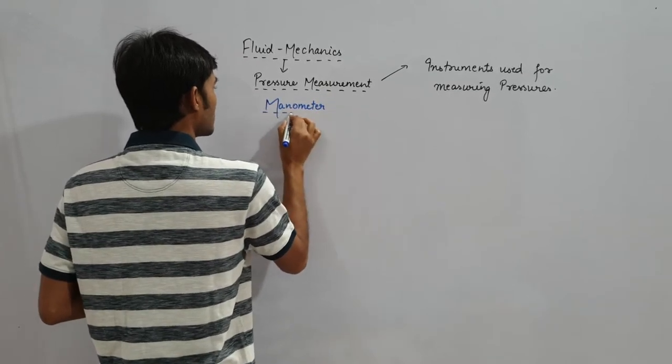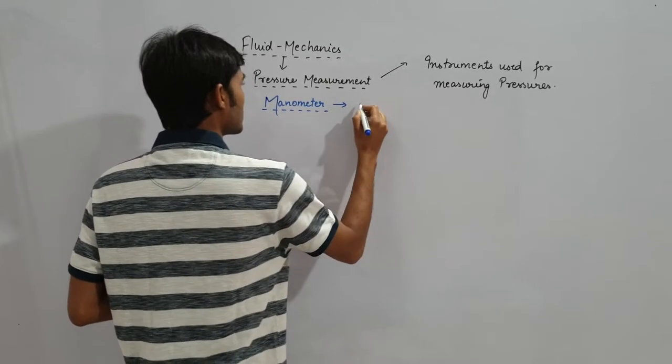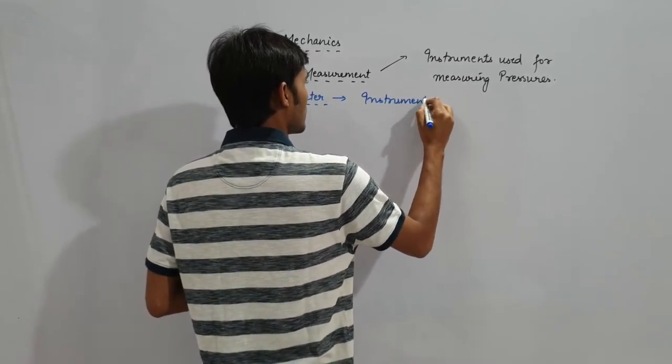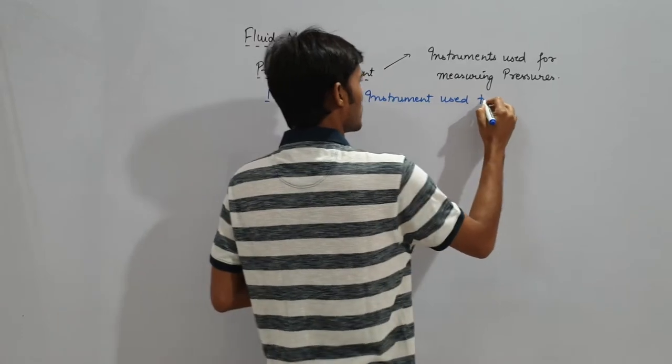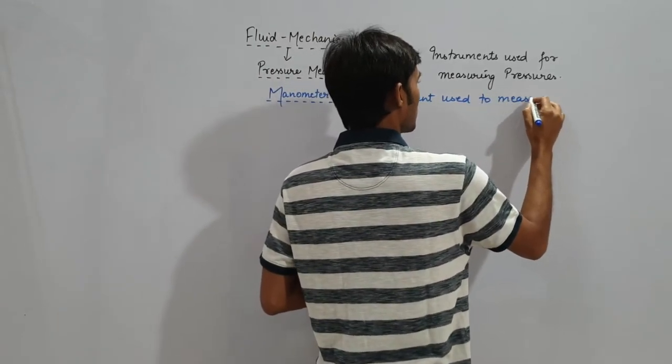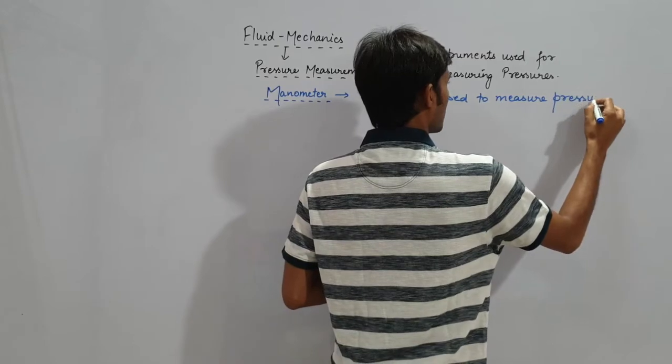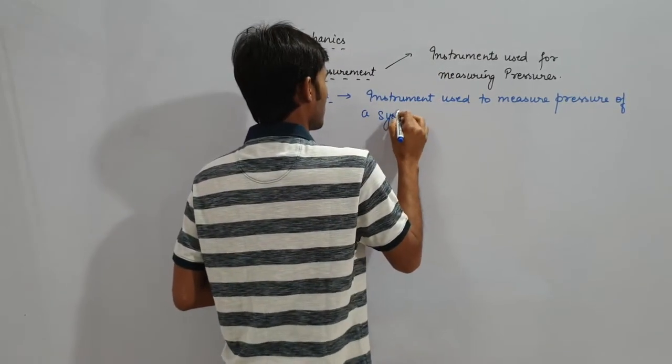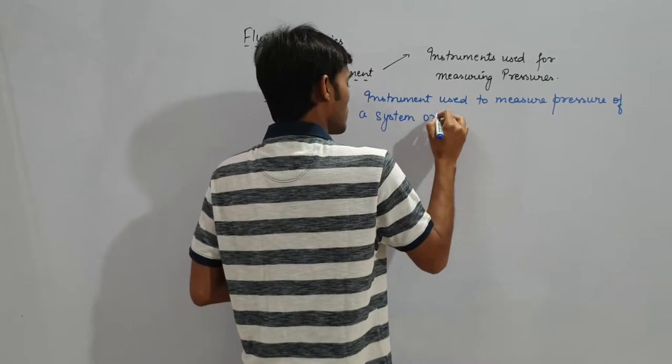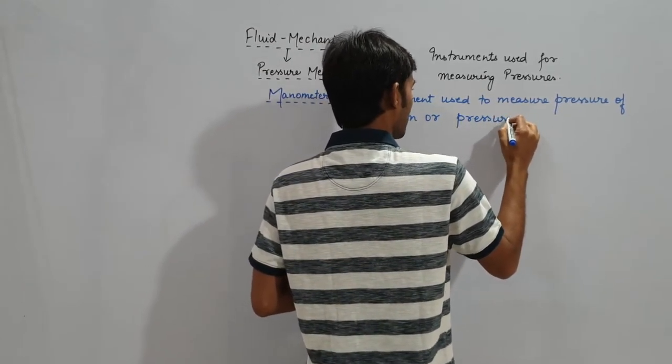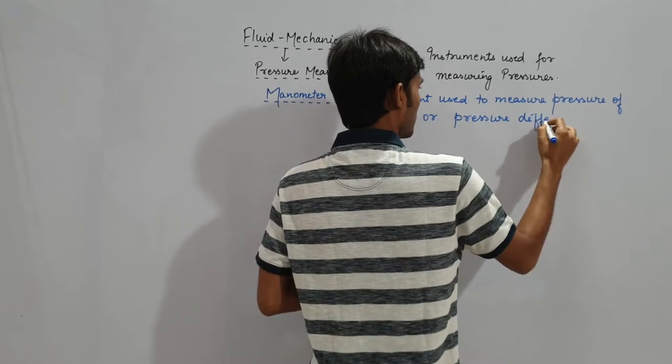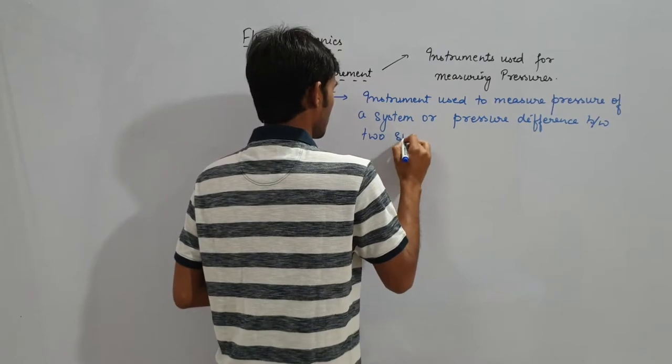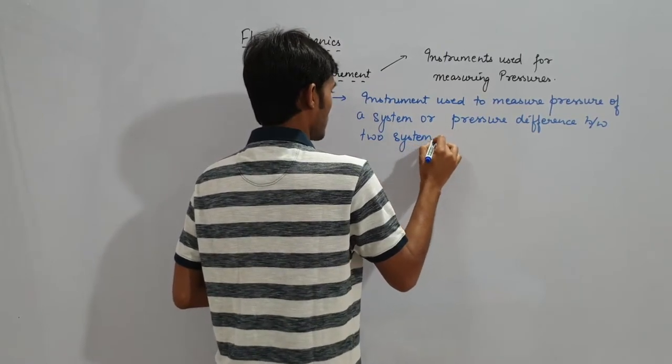If you ask what is a manometer, it is an instrument used to measure pressure of a system, and pressure difference between two systems.